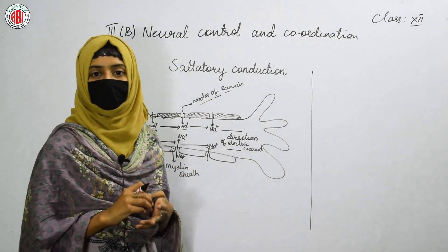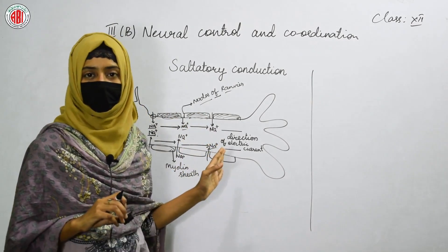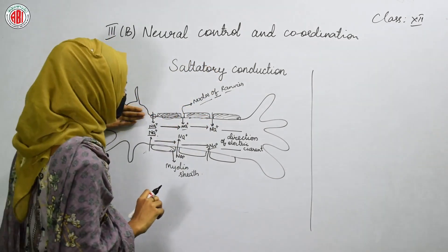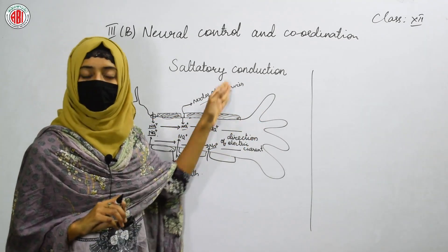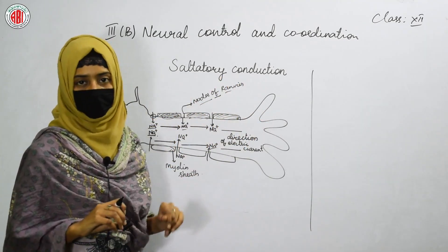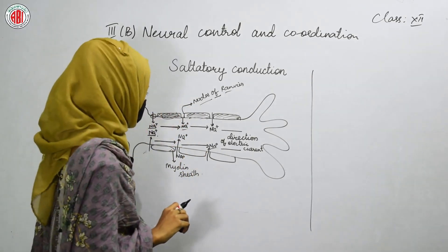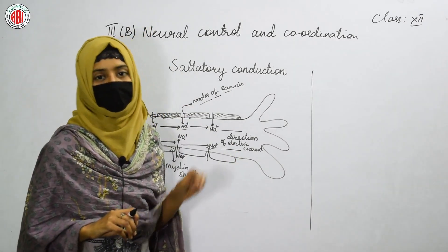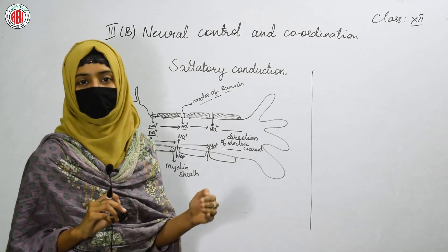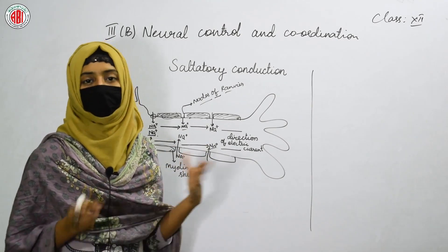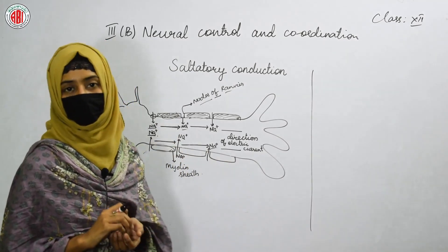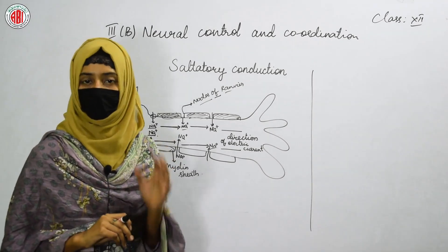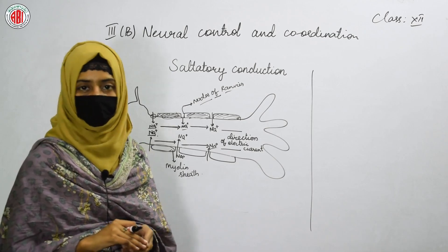The flow of current: the direction of electric current inside the cell is opposite to that of the outside. If the current flows in one way inside the cell, then outside of the nerve cell it flows in the opposite manner. This is how the direction of electric current can be seen in a nerve cell causing saltatory conduction. Saltatory conduction is a process by which nerve signals can be transmitted faster to the central nervous system than normal conduction. This is about saltatory conduction, where depolarization occurs at specific nodes in the neurons to generate nerve impulses.